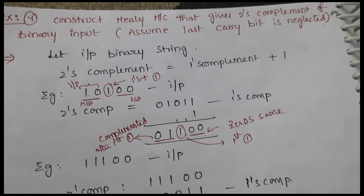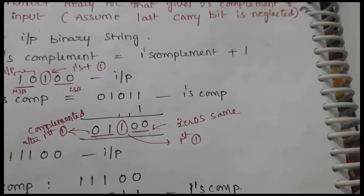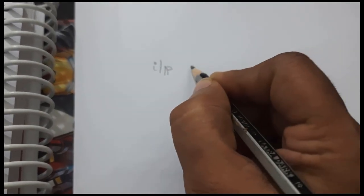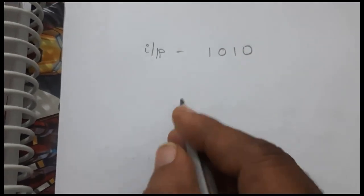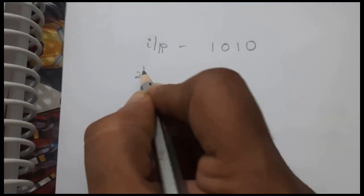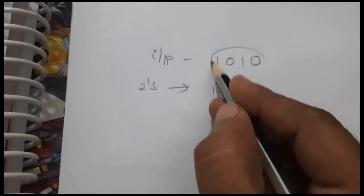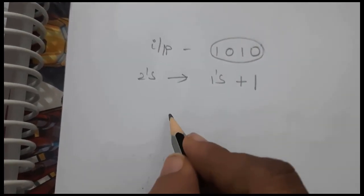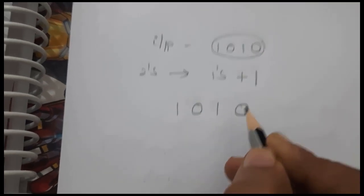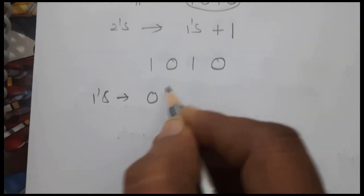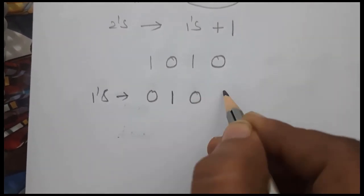As we all know, for a binary input string, for example if we have the input string as 1 0 1 0, what is its 2's complement? First we need to write the 1's complement and then add 1. The 1's complement changes 1s to 0s and 0s to 1s. So the 1's complement of 1 0 1 0 is 0 1 0 1.